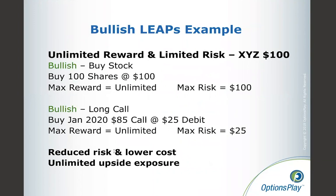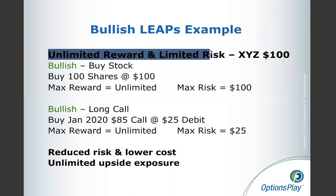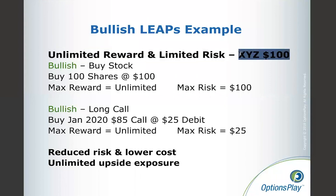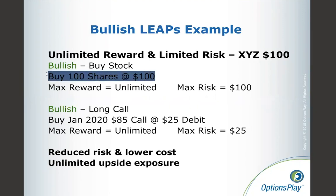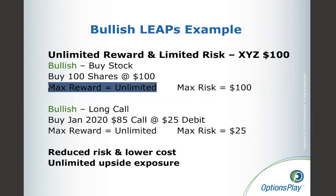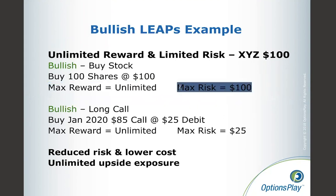Let me go through a quick LEAP example comparing buying the stock to buying the LEAP. For a bullish example, let's use stock XYZ trading at $100. If you buy 100 shares at $100, your max reward is unlimited and your max risk is $100 per share. If you buy a January 2020 85-strike call — already in the money by about 15 — and pay $25 for that trade, you still get unlimited upside reward but your max risk is only $25 per share.